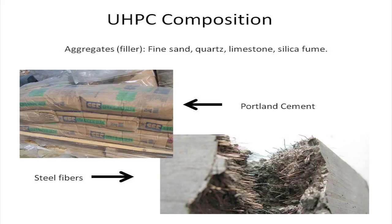Concrete in general is divided into two parts: filler, which contains the aggregates, and the binder, which is made up of mostly Portland cement. In normal concrete, aggregate represents about 70% of the mixture. Ultra high performance concrete, on the other hand, has a smaller aggregate composition because it uses very fine aggregates such as sand, quartz, limestone, and silica fume. The use of these finer aggregates means there is a relatively high amount of binder being used, adding to the expense but also the strength of the material.